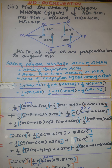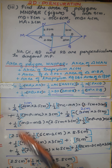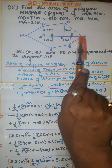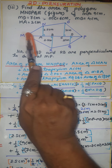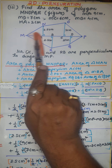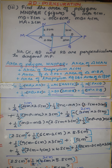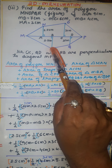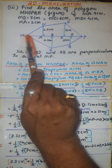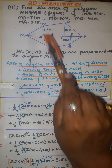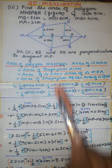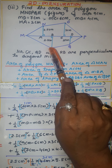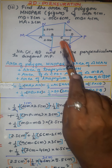Let us analyze this problem. They have given the measure of MP as 9 cm, MD as 7 cm, MC as 6 cm, MB as 4 cm, and MA as 2 cm. They have also given the measure of the perpendiculars NA, OC, RB, and QD to the diagonal MP. The perpendicular NA is 2.5 cm, OC is 3 cm, BR is 2.5 cm, and DQ is 2 cm.